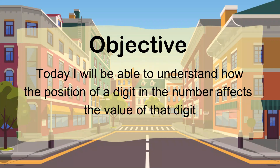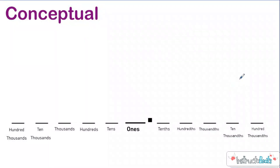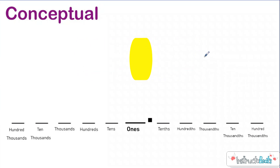Our objective today: I will be able to understand how the position of a digit in a number affects the value of that digit. As we discussed in our understanding place value lesson, throughout the world the most common number system is the Hindu-Arabic base 10 number system. It's all based on the powers of 10. It is a positional number system where the position of a digit changes the value of that digit.